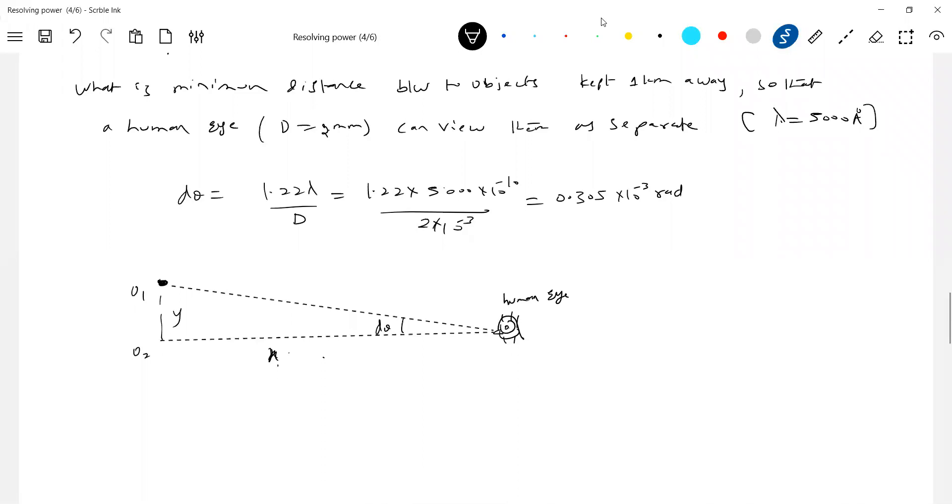What is d theta? We have the formula: d theta equals y by x. Substituting, we get 0.305 × 10^-4 = y/x, where x is 1 kilometer.